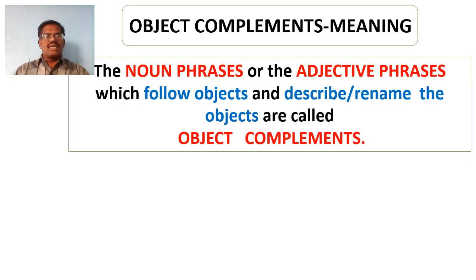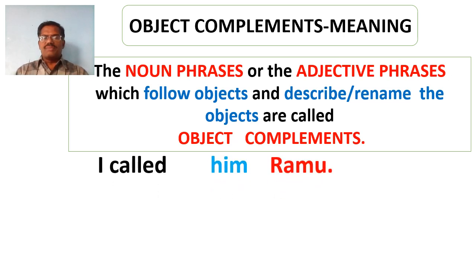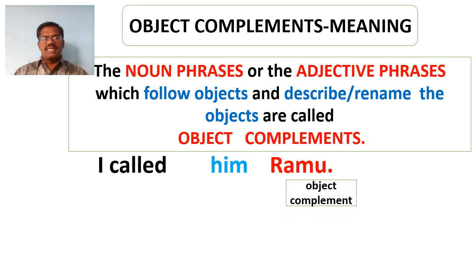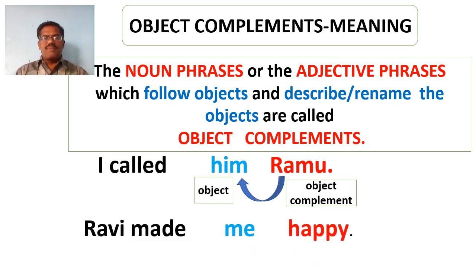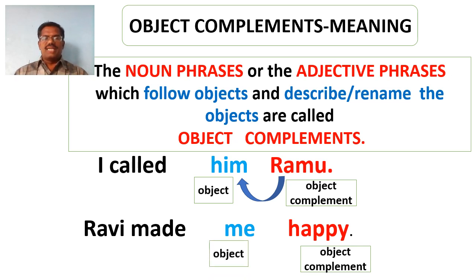Noun phrases or adjective phrases which follow the objects and describe or rename the objects are called object complements. For example: 'I called him Ramu' — here the noun phrase 'Ramu' is an object complement because it describes or renames the object 'him'. Another example: 'Rabbi made me happy' — here the adjective phrase 'happy' is an object complement because it describes the object 'me'.